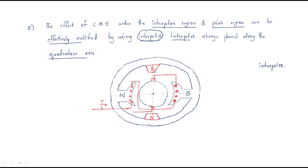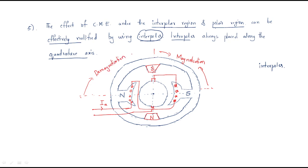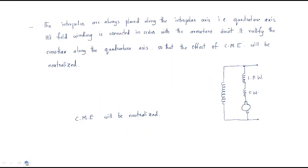This region is generally the magnetization region, and between these two regions the other region is the demagnetization region. So we can divide it into two regions. This is the placement of the polar region and the placement of the compensating winding. These two points are related to the interpoles.